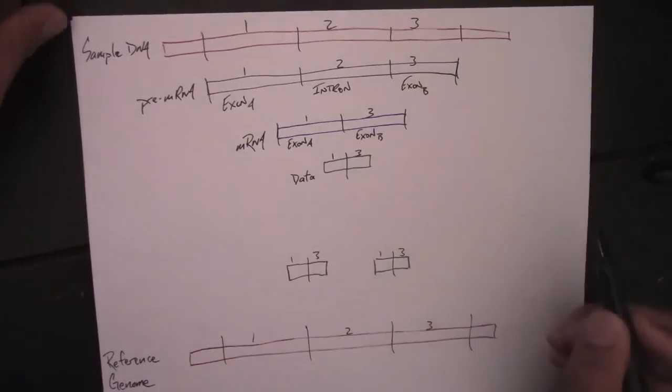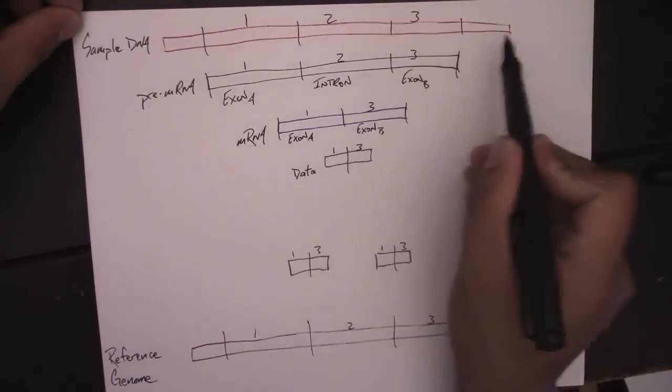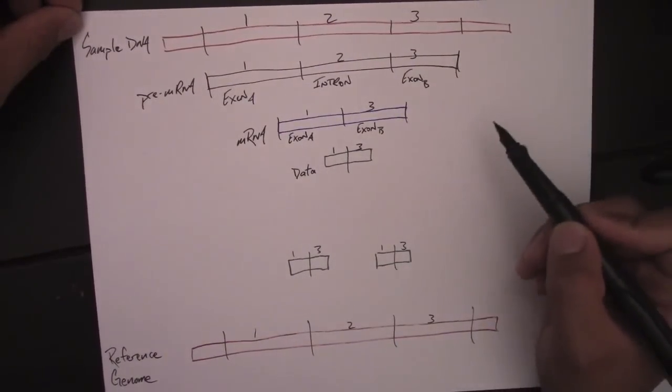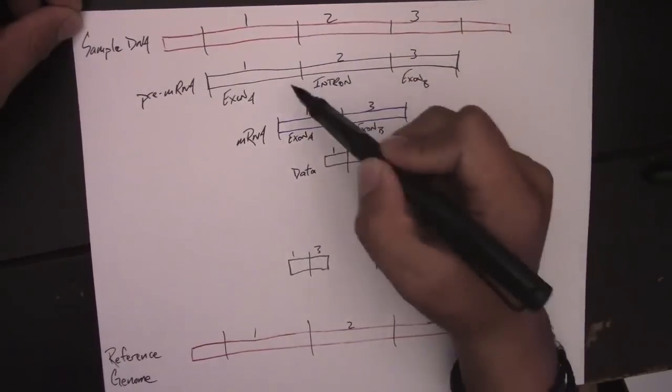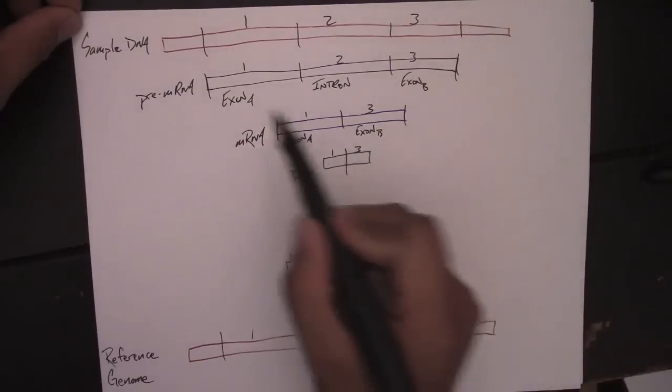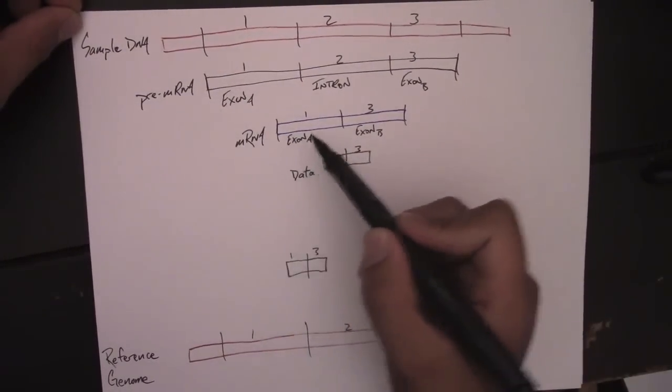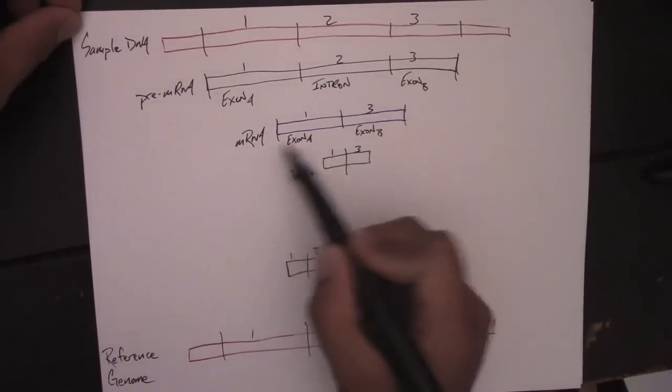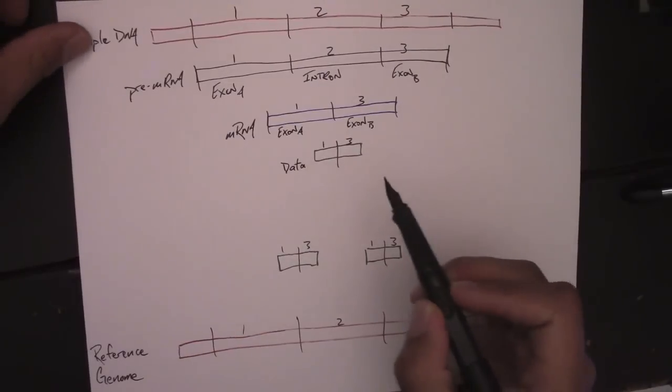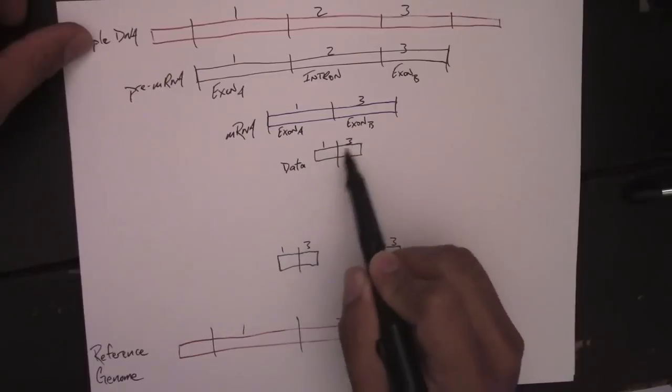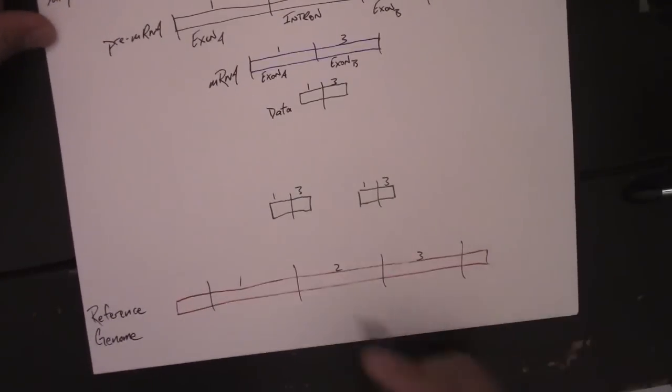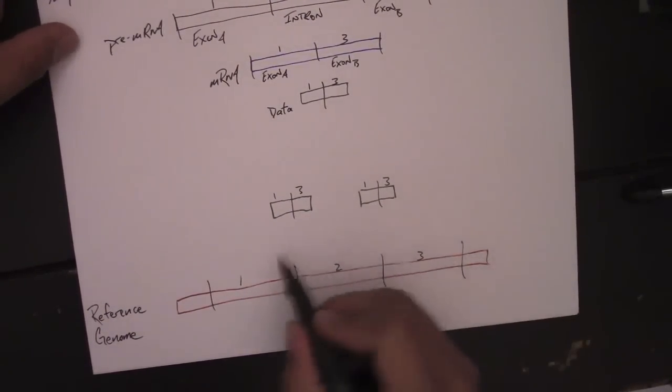So let me show you what I mean. So imagine we had a eukaryotic organism here that has this sample DNA and generates this pre-mRNA that has both these exons and intronic regions. And I've labeled the sample DNA in sections one, two, and three, showing that exon A comes from section one, the intron from region two, et cetera. So during processing of the pre-mRNA, the intron is spliced out. So the mRNA itself actually only has the exons A and B. Now imagine we did an RNA-seq run and we generated a read that spanned this exon boundary.